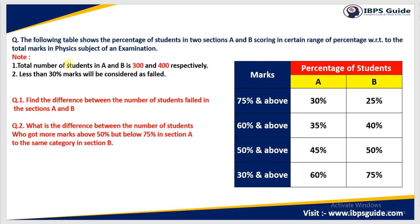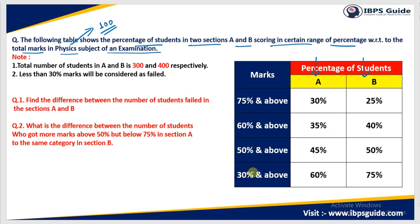I am going to explain this particular type of DI with the help of this example. The direction of the question is: the following table shows the percentage of students in two sections A and B scoring a certain range of percentage with respect to the total marks in the physics subject of an examination. So there was a physics examination with students in two sections — section A and section B. There are some percentage of students who have scored certain percentage of marks with respect to the total marks. For example, if the physics subject has a total mark of 100, then there are some students who have scored 75 marks or above 75 marks.